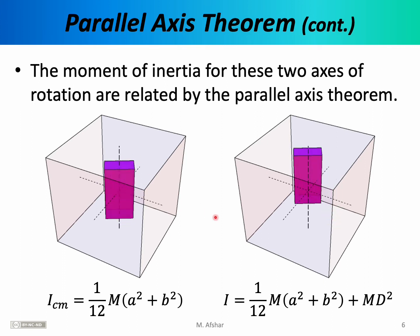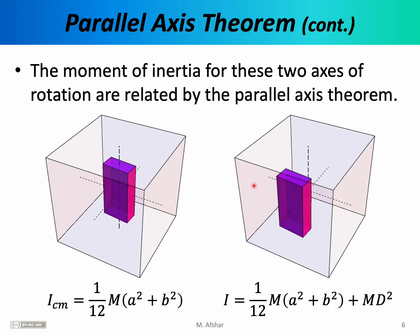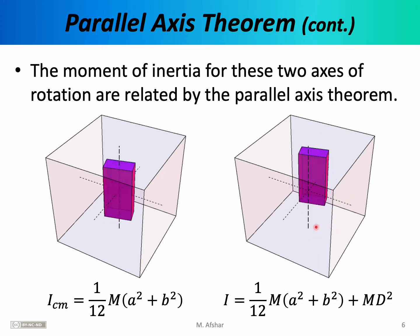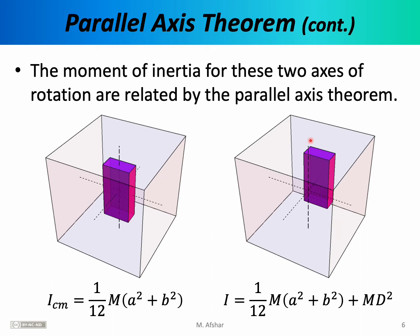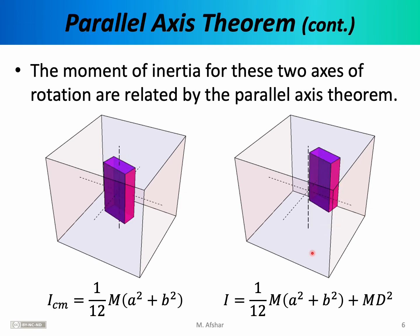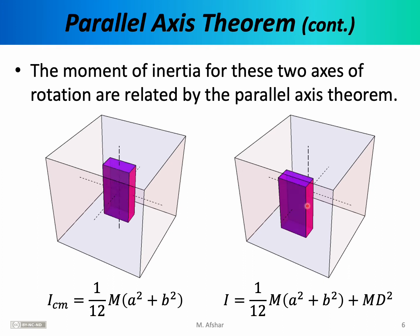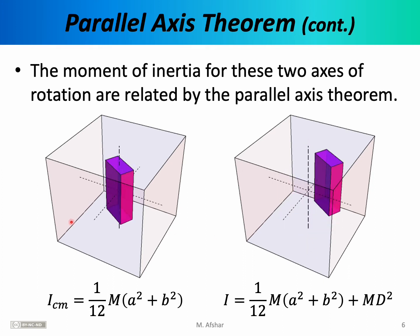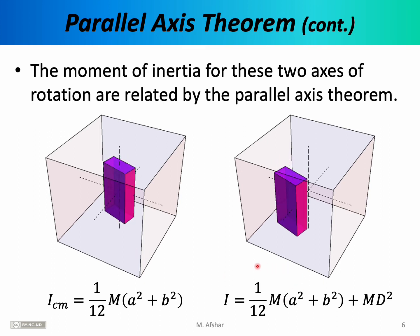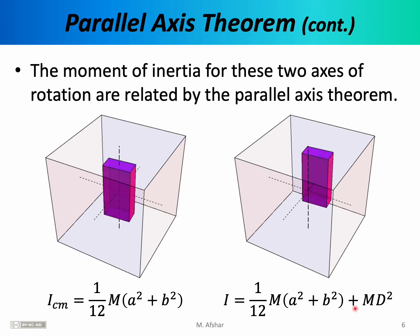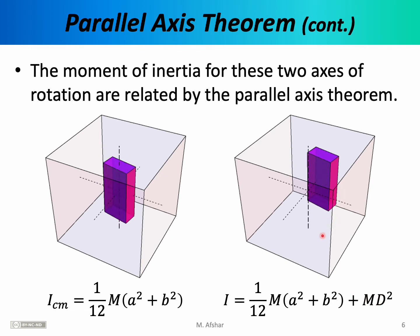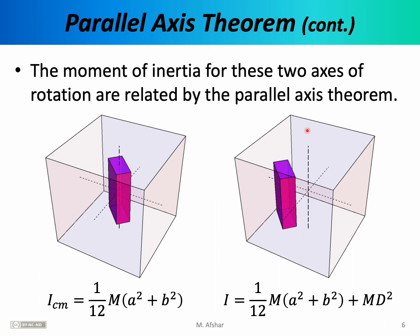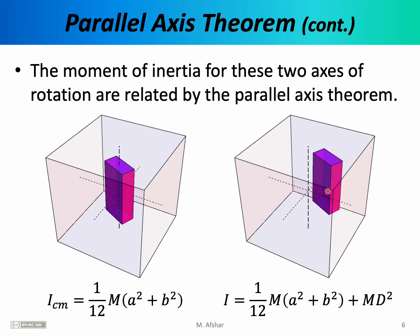Now suppose you want to take the same object and rotate it differently. Here's the new rotational configuration on the right. We are still rotating around the z-axis, but now the z-axis is no longer passing through the center of mass — in fact, the axis of rotation is not passing through the object at all. In this case we can use the parallel axis theorem. The new axis is parallel to the old axis, so we take the moment of inertia relative to the center of mass and add md², where d is the distance between the new axis and the old axis which passed through the center of the object.